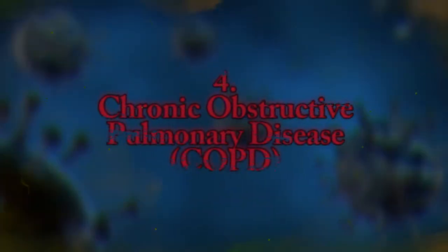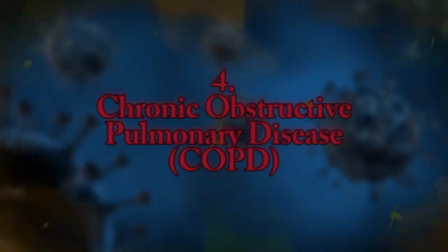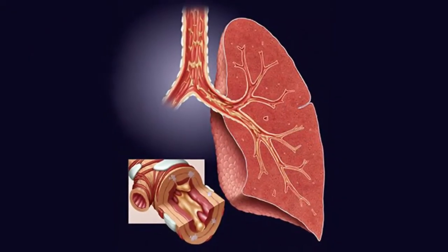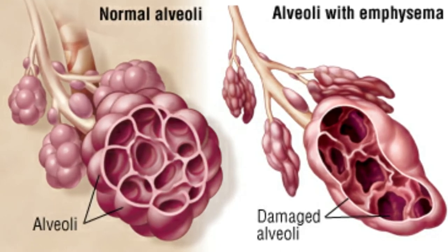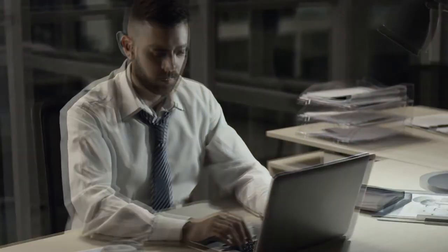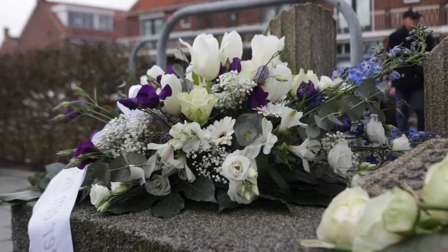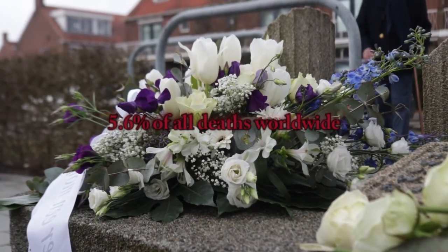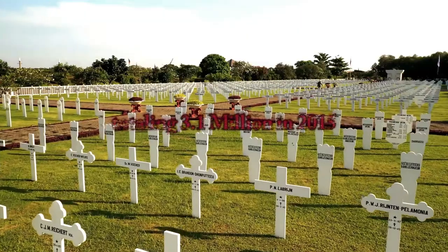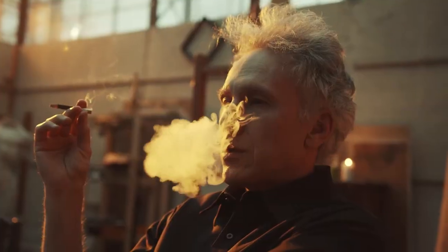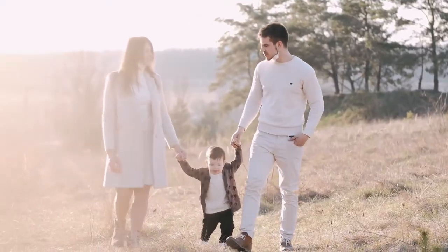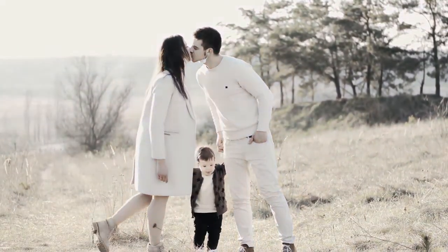Number 4: Chronic Obstructive Pulmonary Disease. Chronic bronchitis and emphysema are the two primary forms of COPD, with some thought to adding asthma as well, although no consensus has been reached. COPD deaths accounted for 5.6% of all deaths worldwide, totaling 3.1 million in 2015. Risk factors include smoking, secondhand smoke, lung irritants, family history, and a history of respiratory infections as a child.